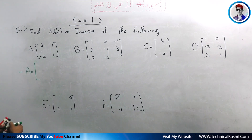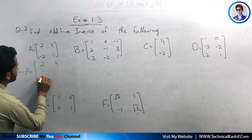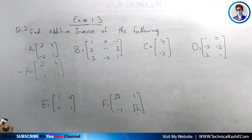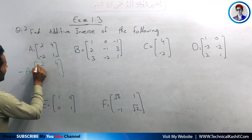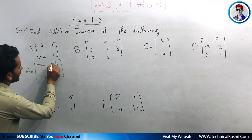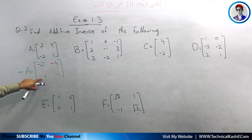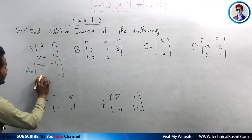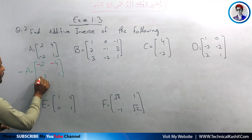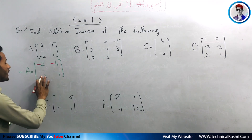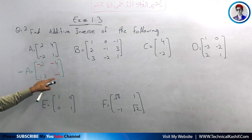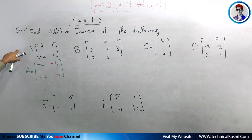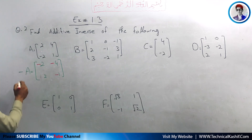First we write matrix A. To find its additive inverse, we change the sign of each element. For the element 2, we use minus 2. For minus 4, it already has a minus sign so we neglect it and use positive 4. For negative elements we make them positive. So the matrix becomes: minus 2, minus 4, 2, and minus 1, which is the additive inverse of matrix A.